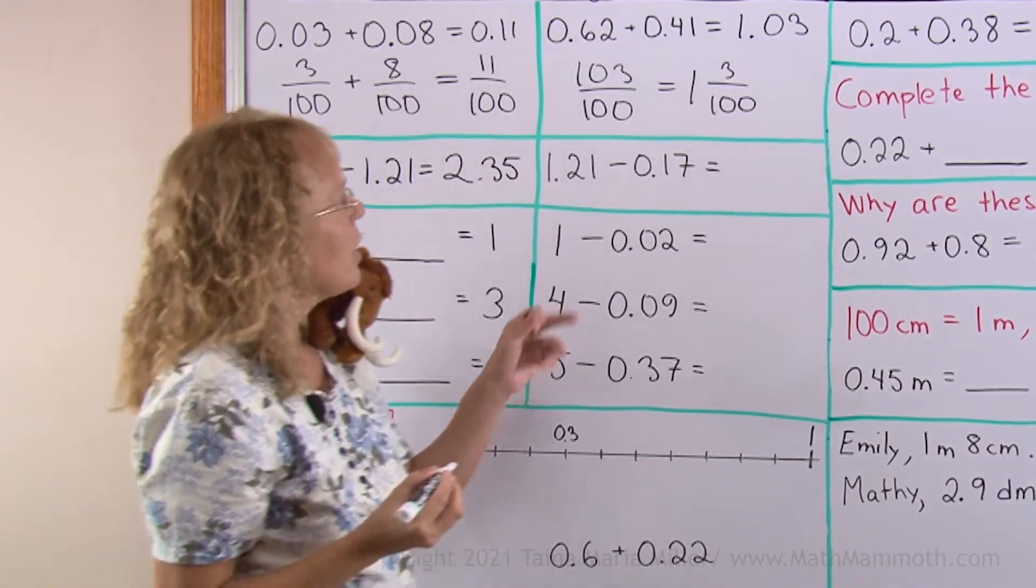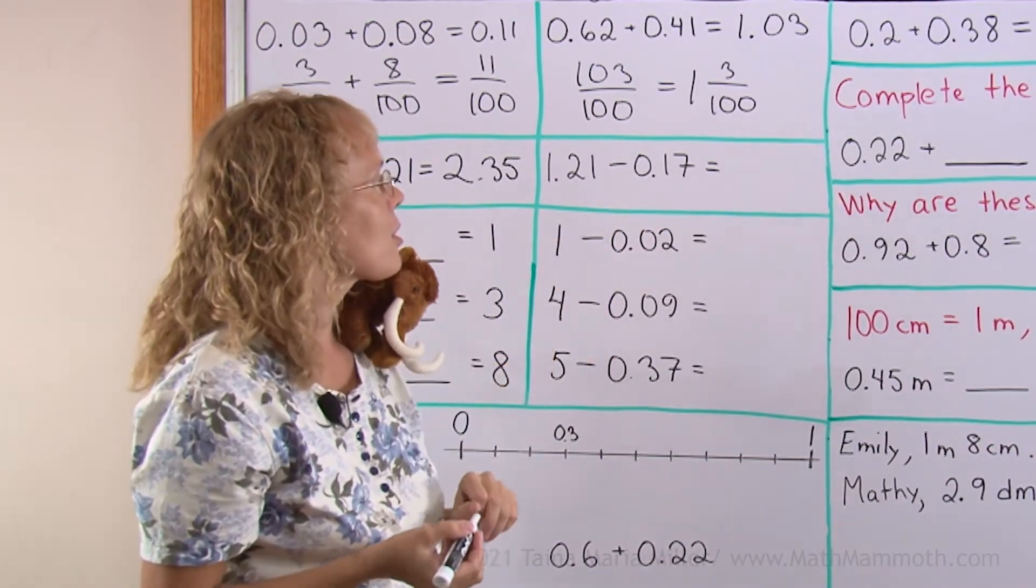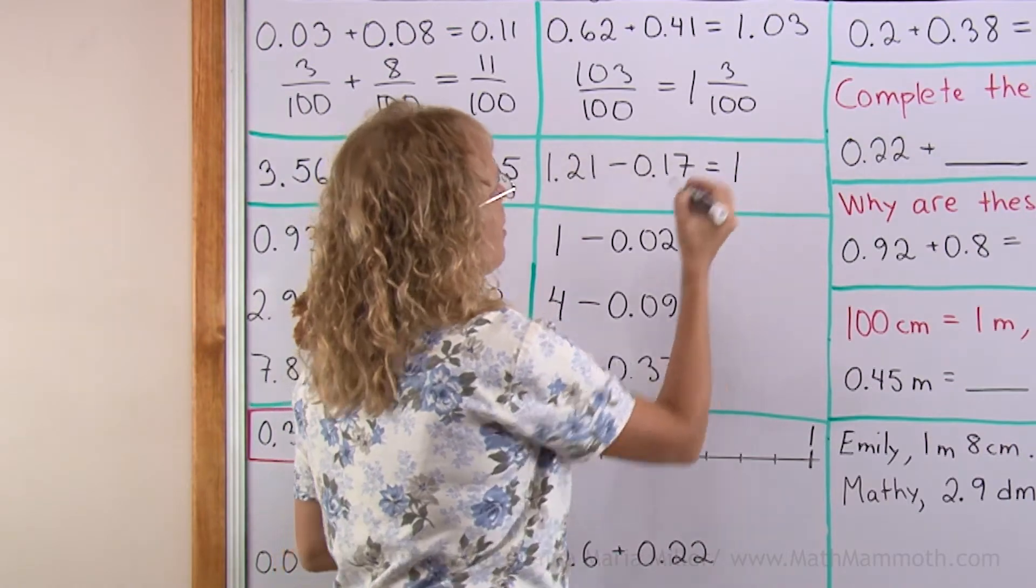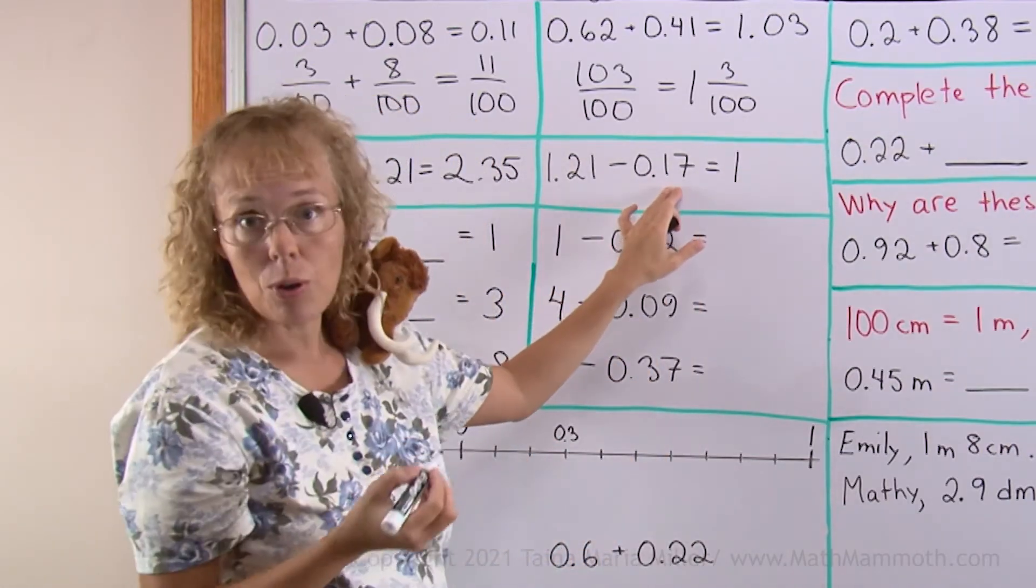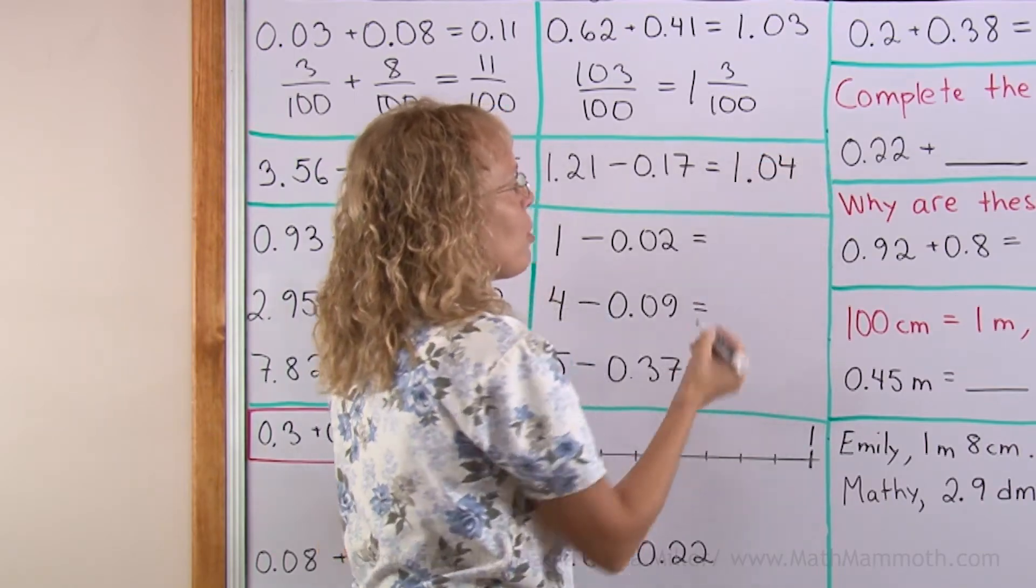So that's pretty easy. Here we have one, and twenty-one hundredths take away seventeen hundredths. So that leaves one, and then four hundredths, right? So that's how that is written, one point zero four.